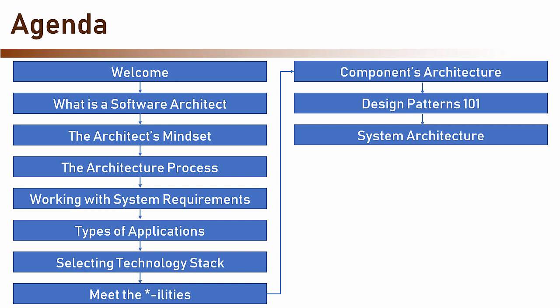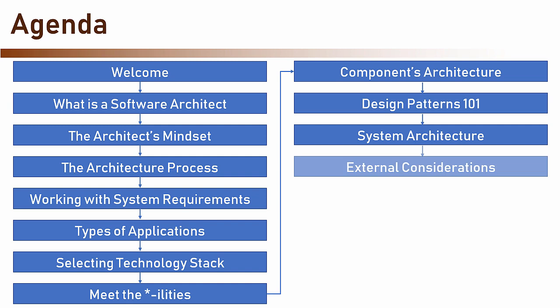Every seasoned architect knows that architectural decisions are rarely made on a pure technical basis. There are always other considerations and constraints that must be taken into account. In the next section, we will explore the most common constraints and see how they might affect the architecture.